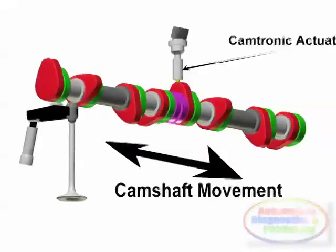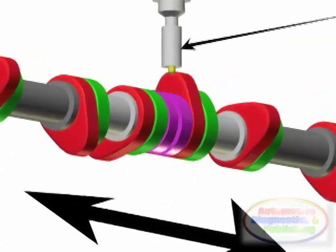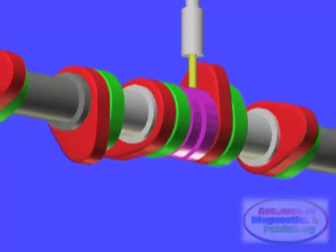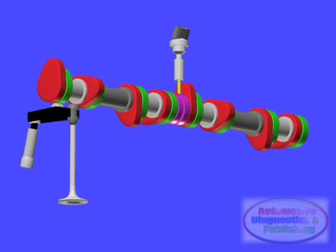At light or part load, the Camtronic switches to a low lift cam profile to limit the amount of air intake, and at the same time the throttle butterfly can remain wide open and reduce pumping loss.